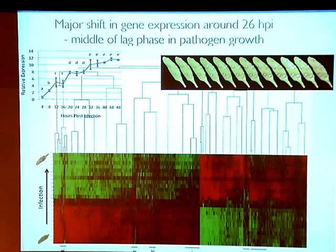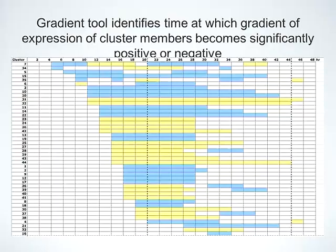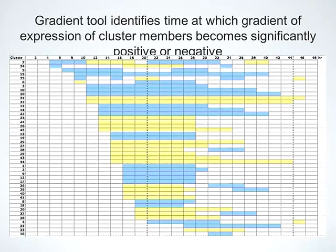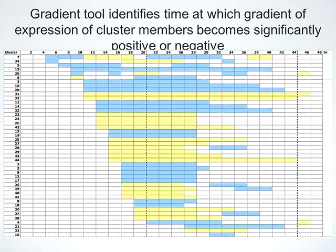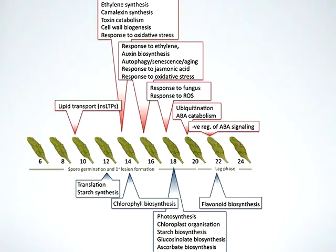Despite this major shift, we see many genes responding earlier, later, or transiently. We used another tool developed by Chris Penfold at Warwick, which finds the time at which a gene expression profile has a significantly positive or negative gradient. For each cluster, this shows the time at which at least half the genes in that cluster have a significantly negative or positive gradient, allowing us to order these clusters by when gene expression starts to change. We then used a BiNGO tool to look for processes in these clusters, ordering biological processes over time.